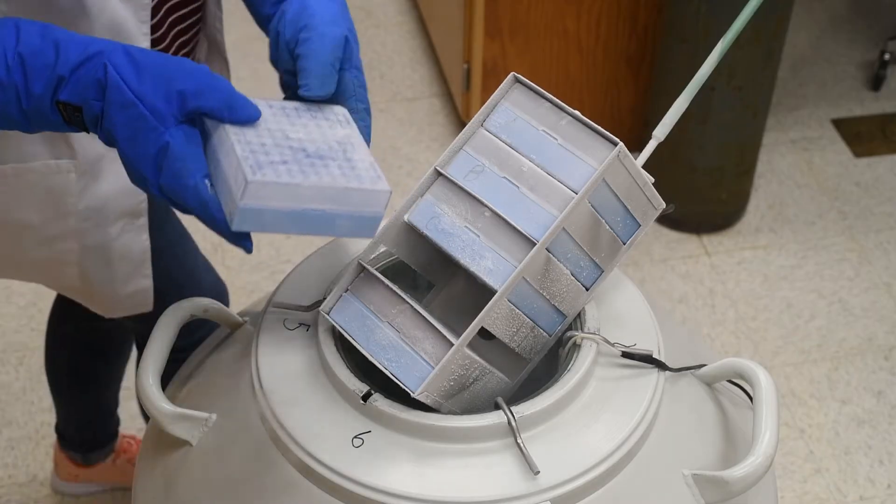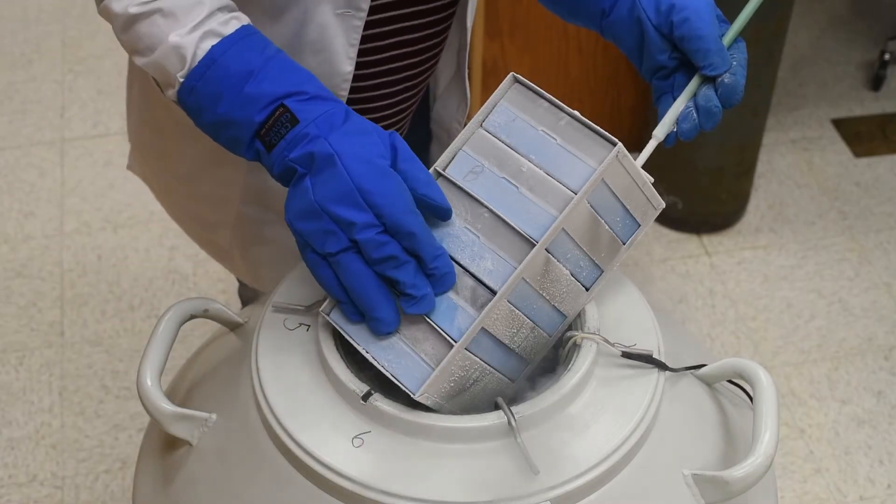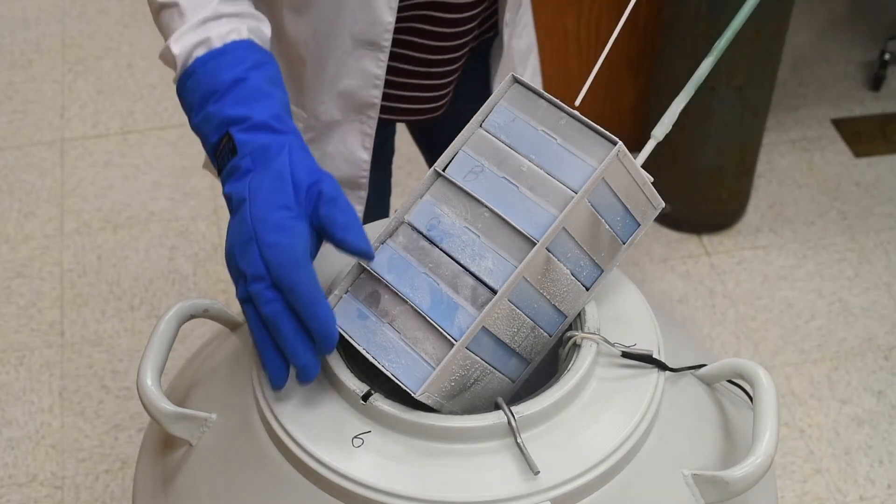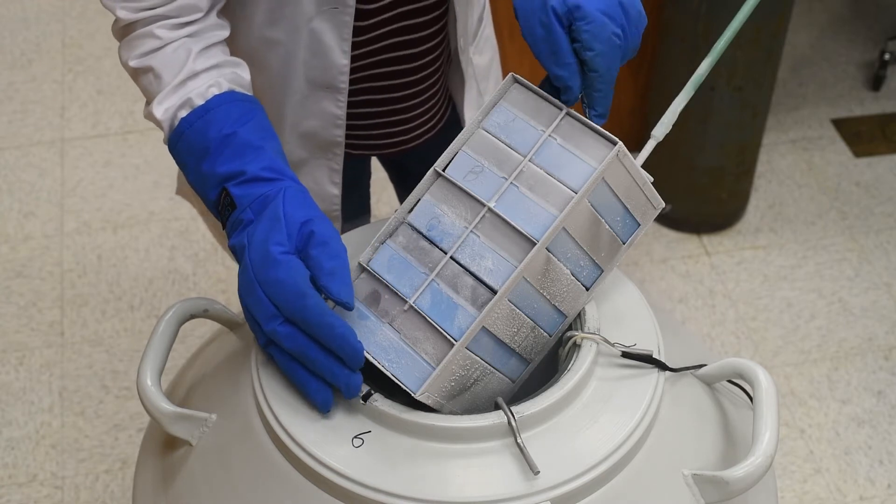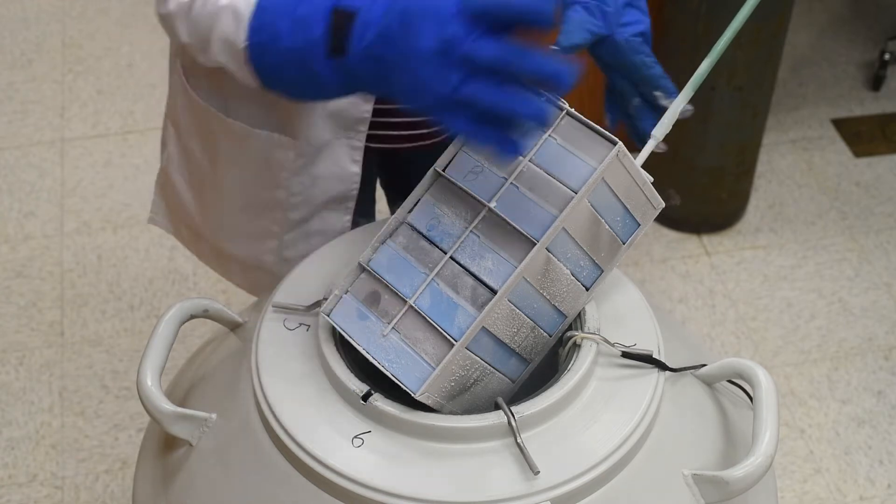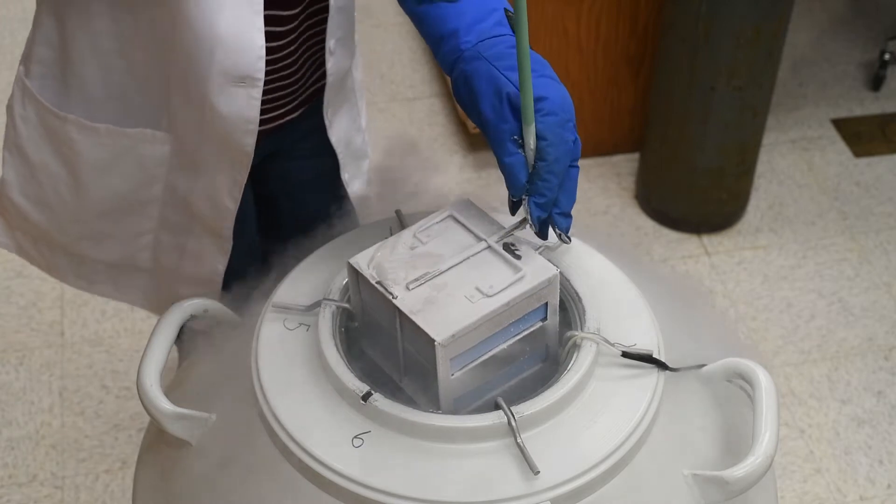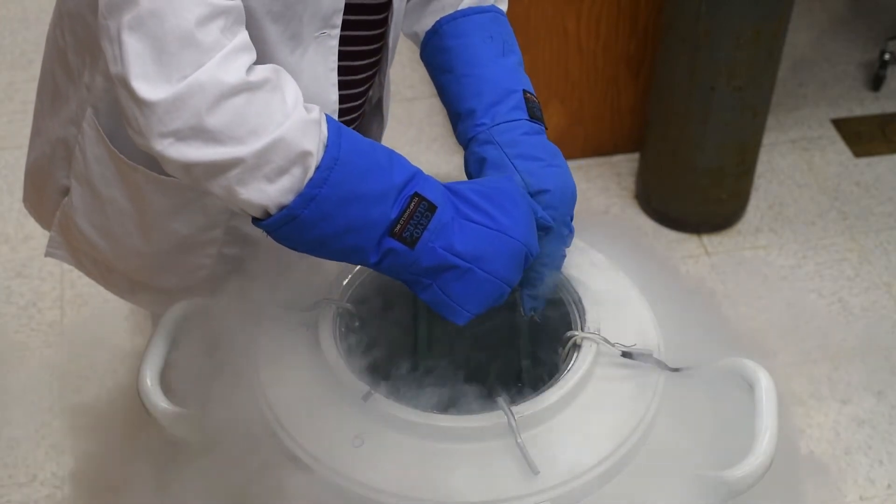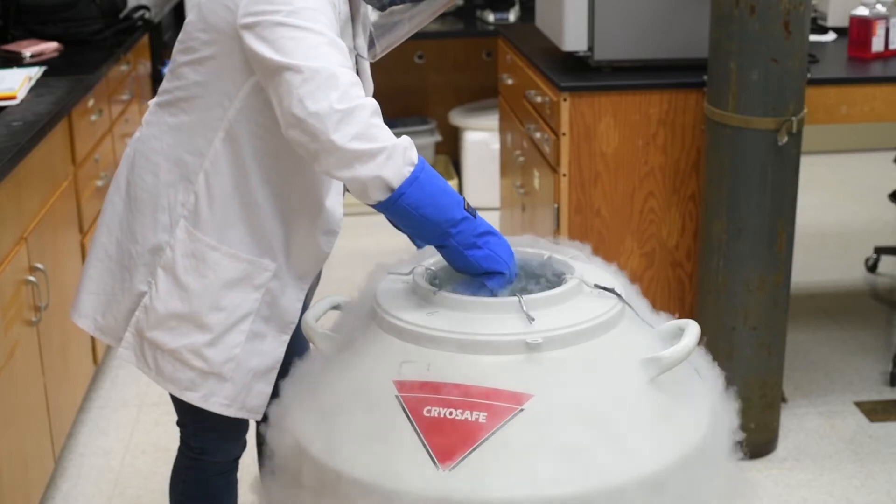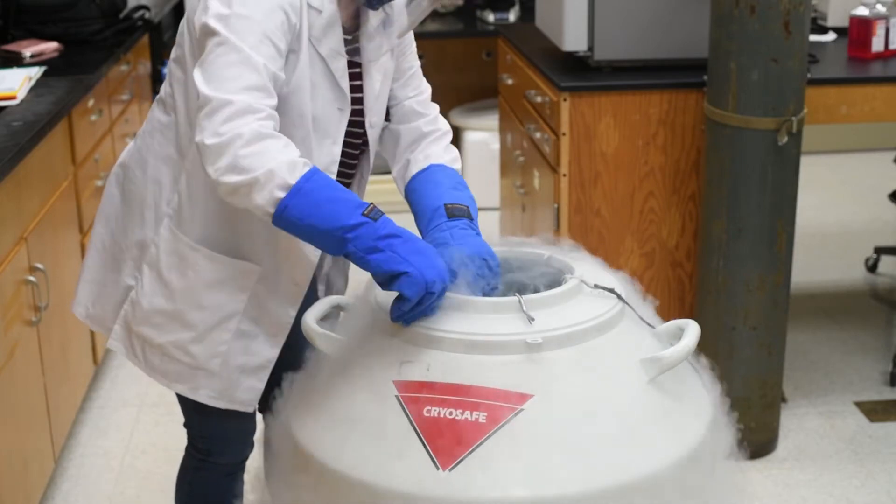Make sure the box is closed completely before placing it back into the liquid nitrogen storage vessel. Once the box is secured back into its place, replace the pin to lock all the boxes in. Quickly lower the boxes back into the liquid nitrogen and push back into place.